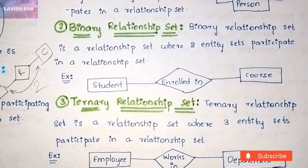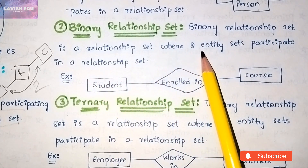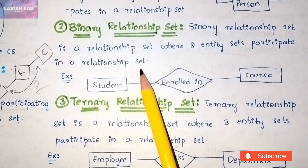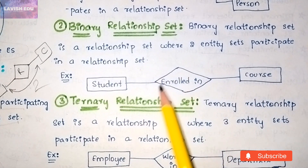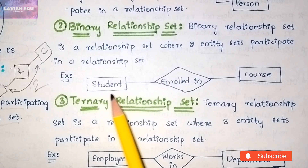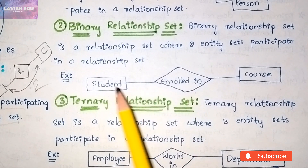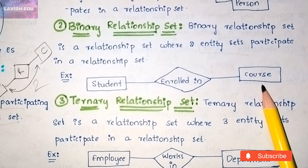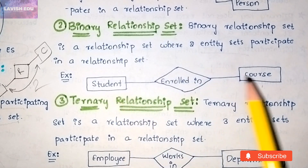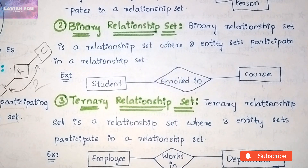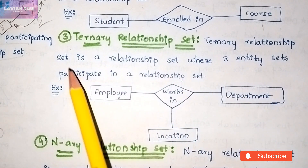A binary relationship set is one where two entity sets participate in a relationship set. Here, 'student' is one entity and 'course' is another entity, and 'enrolled in' is the relationship. Since the relationship is formed between two entities — student and course — this is termed a binary relationship set.